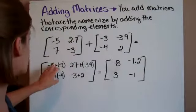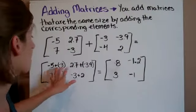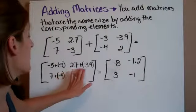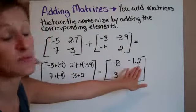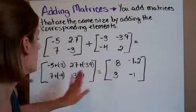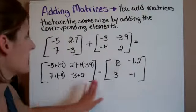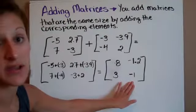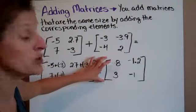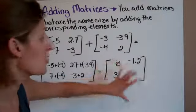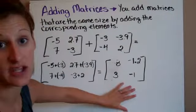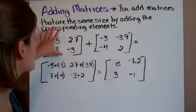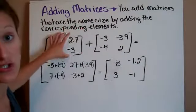Now that I've brought them together, I do negative 5 plus negative 3, that's where I get my negative 8. My 2.7 plus negative 3.9, that's where I get negative 1.2. And my 7 plus negative 4, that's where I get 3. And my negative 3 plus 2 is where I get a negative 1. This new matrix right here is our answer. This matrix is the addition of these two matrices.